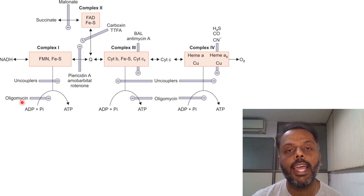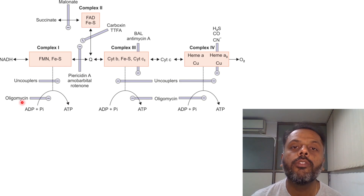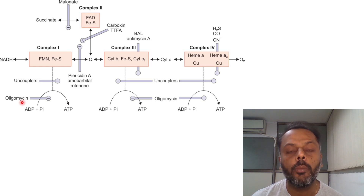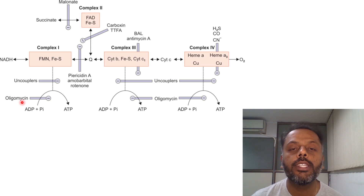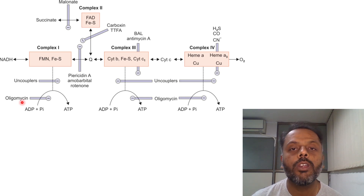The fourth category of inhibitors of the electron transport chain are ionophores, also called channel formers. Examples of ionophores are valinomycin and gramicidin A. These complete the inhibitors of the electron transport chain.